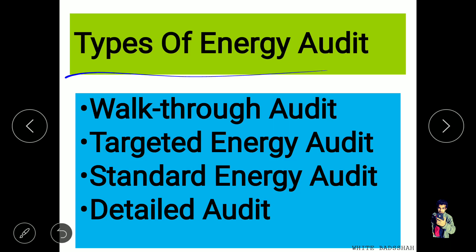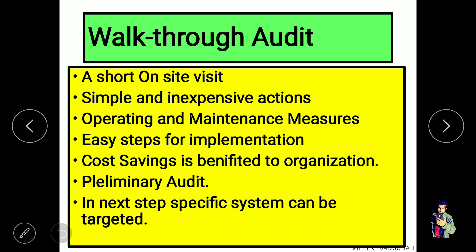Now, the types of energy audit. The first type is the walkthrough audit, the second is the targeted energy audit, the third is the standard energy audit, and the fourth one is the detailed audit.